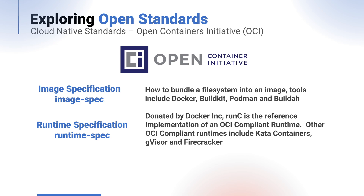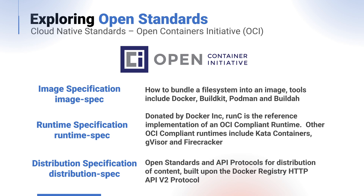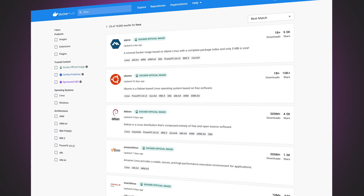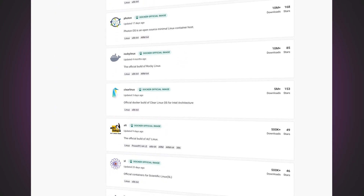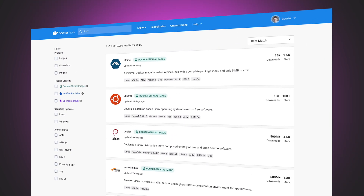Correspondingly, we could run that image created by any of these with technologies that implement the runtime spec. There's also the lesser known distribution specification, which defines open standards and API protocols to standardize the distribution of content. This specification is built on top of the efforts of Docker and was created using the Docker registry HTTP API version two protocol, which is used by Docker Hub.